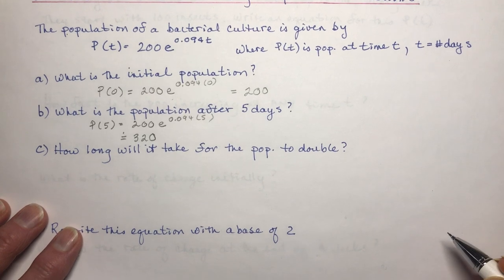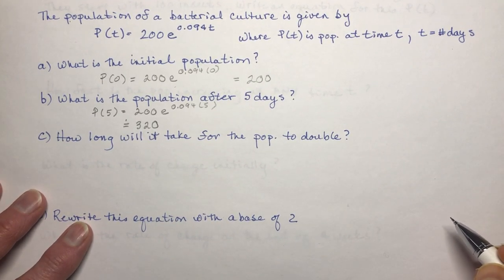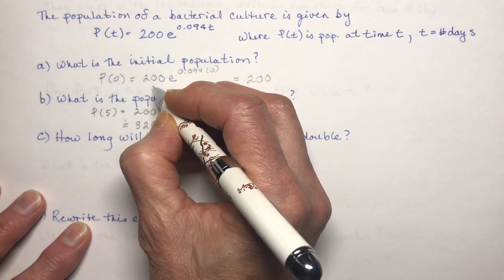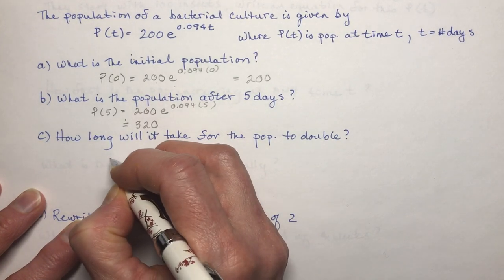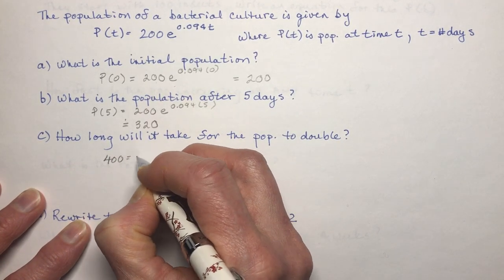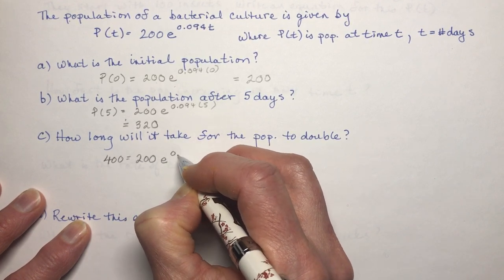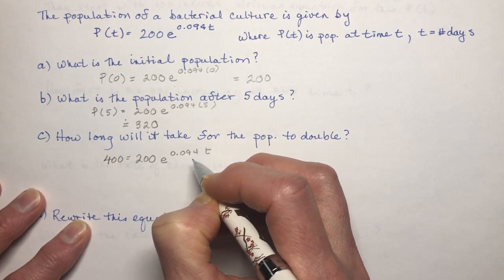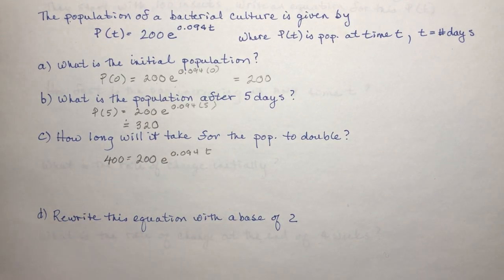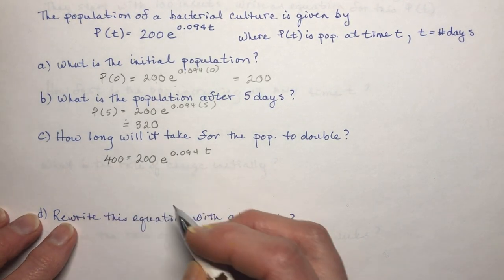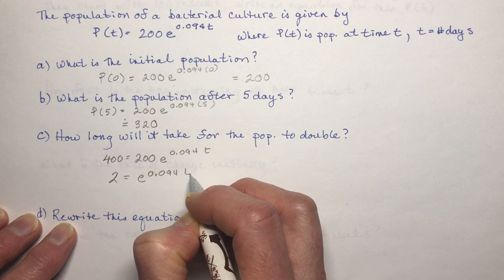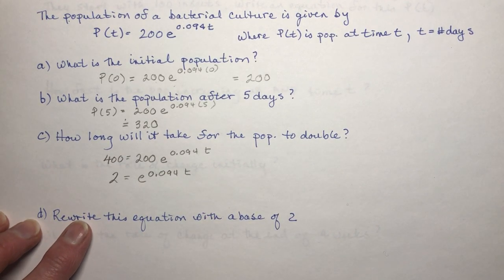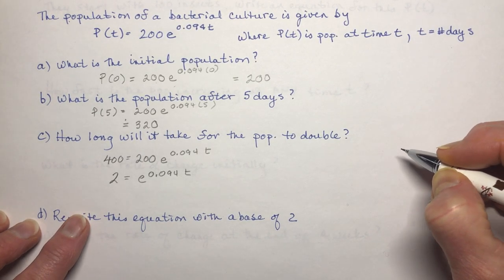How long will it take for the population to double? The initial number is 200, so doubling gives 400. We set up 400 = 200 times E to the 0.094T. Dividing both sides by 200, we get 2 = E to the 0.094T. Now we need to take the natural log of each side.